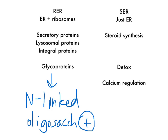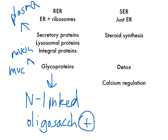What's a cell that would be secreting a lot of proteins — say, a lot of antibodies? That type of cell would be a plasma cell, so we know a plasma cell is going to be rich in RER. What's a cell that maybe secretes a lot of glycoproteins? One example of a glycoprotein is mucin, so a mucus-secreting cell would be rich in RER — for example, an intestinal cell.